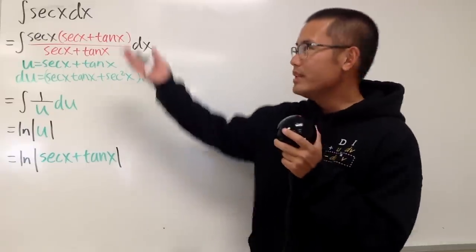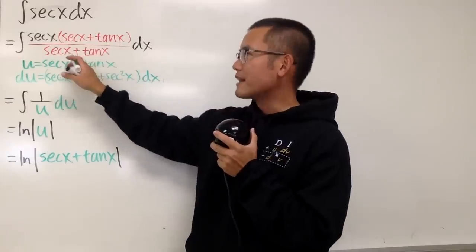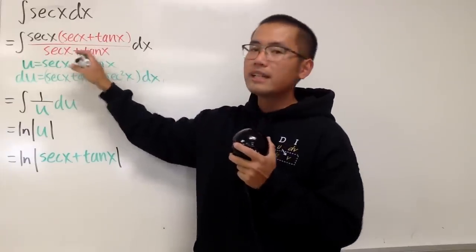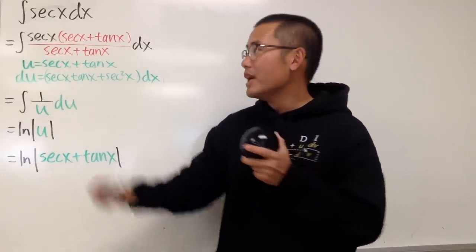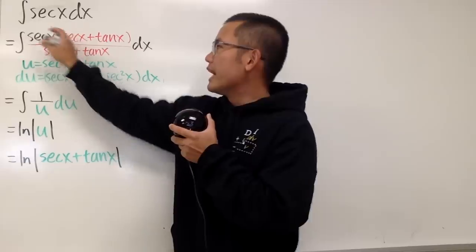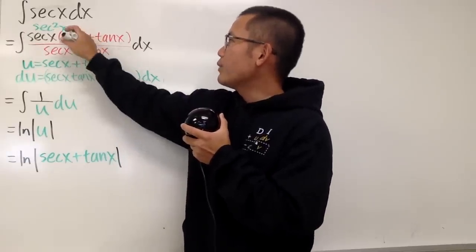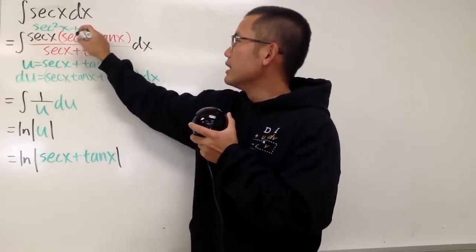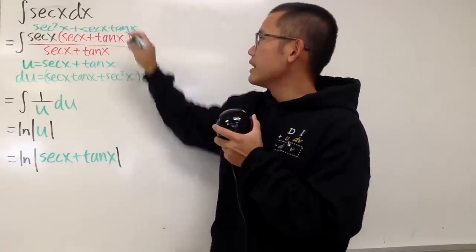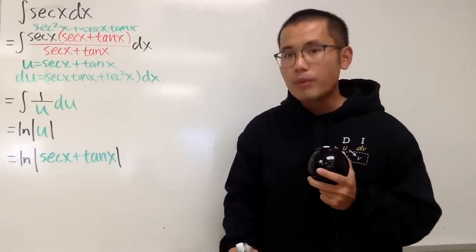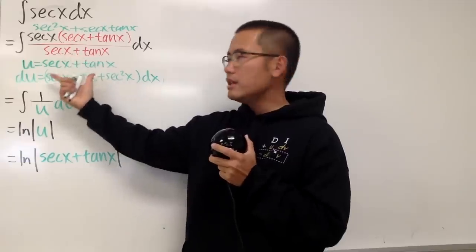As we all know, the standard way to integrate secant x is to multiply the top and bottom by the factor secant x plus tangent x. This works out nicely because if we distribute the top, we get secant squared x plus secant x tangent x. We can do a u-sub now — let u equal the denominator.